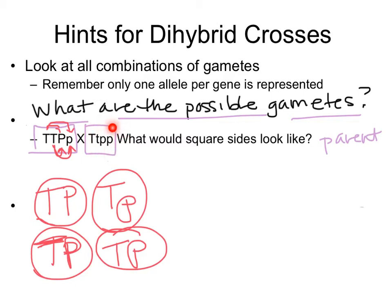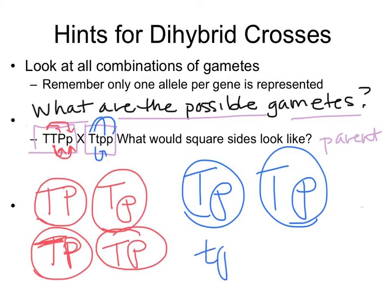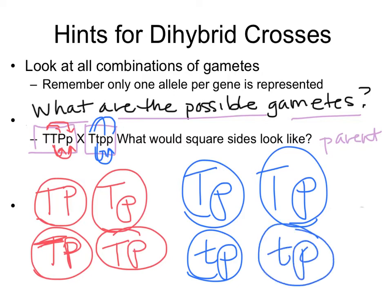What about the other parent? Same idea — homologous pair, one of them carries big T, the other carries little T. A different homologous pair, one carrying little P, the other carrying little P. What are the combinations? Big T with little P, big T with that little P, little T with that little P, and little T with that little P. What do we notice about both parents? Any time there's a heterozygote in one of the traits, we get duplicate gametes — these two are the same and these two are the same.